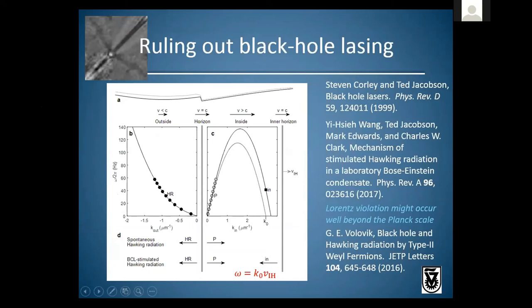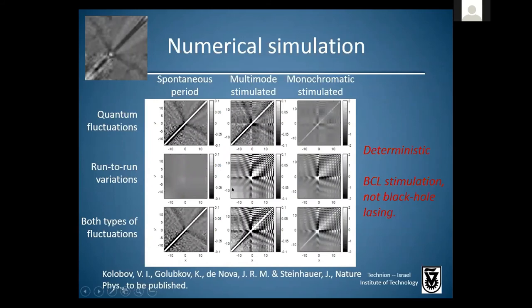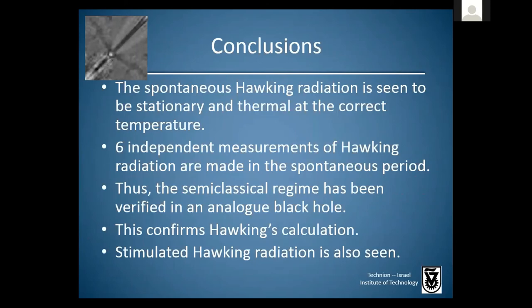There is another phenomenon closely related to stimulated Hawking radiation called black hole lasing, also described by the Jacobson group. We can rule that out because our stimulated Hawking radiation is deterministic, whereas black hole lasing should be stochastic — confirmed by our simulations. In conclusion, the spontaneous Hawking radiation is seen to be stationary and thermal at the correct temperature. We make six independent measurements of Hawking radiation in the spontaneous period, thus verifying the semi-classical regime of Hawking radiation in an analog black hole.